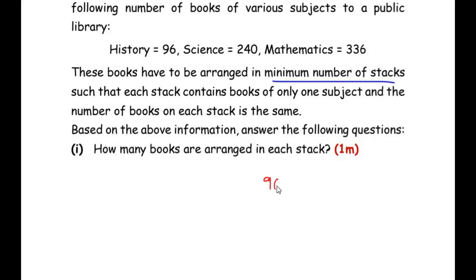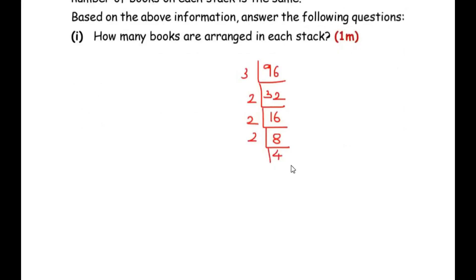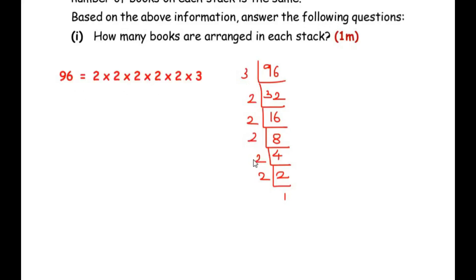Let us begin by prime factorizing the three numbers, starting with the history books: 96. Dividing by 3 gives 3 × 32. Then 32 = 2 × 16, 16 = 2 × 8, 8 = 2 × 4, 4 = 2 × 2, and 2 = 2 × 1. So the prime factorization of 96 is 2 × 2 × 2 × 2 × 2 × 3, that is 2⁵ × 3.